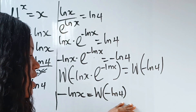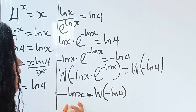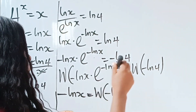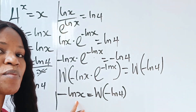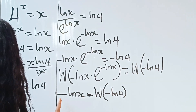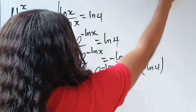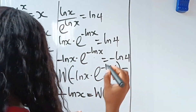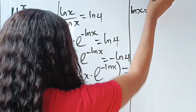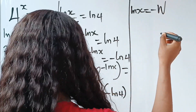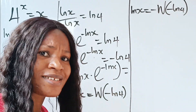Now we need to isolate ln(x). Multiplying through by minus one, we get ln(x) = −W(−ln 4).